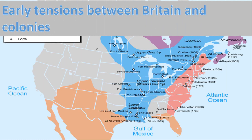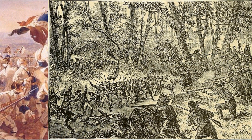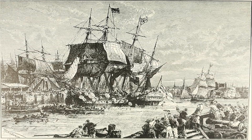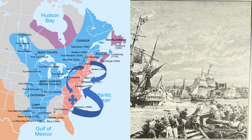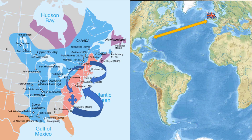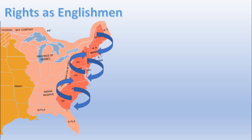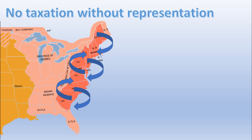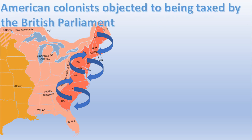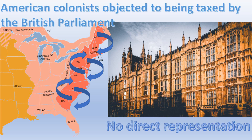The early tensions between Britain and the colonies started around 1754 during the French and Indian War, that is 1754 to 1763. During these times, the colonies began collaborating with one another instead of dealing directly with Britain. These intercolonial activities cultivated a sense of shared American identity and headed for calls like rights as Englishmen and no taxation without representation. American colonists objected to being taxed by the British Parliament, a body in which they had no direct representation.